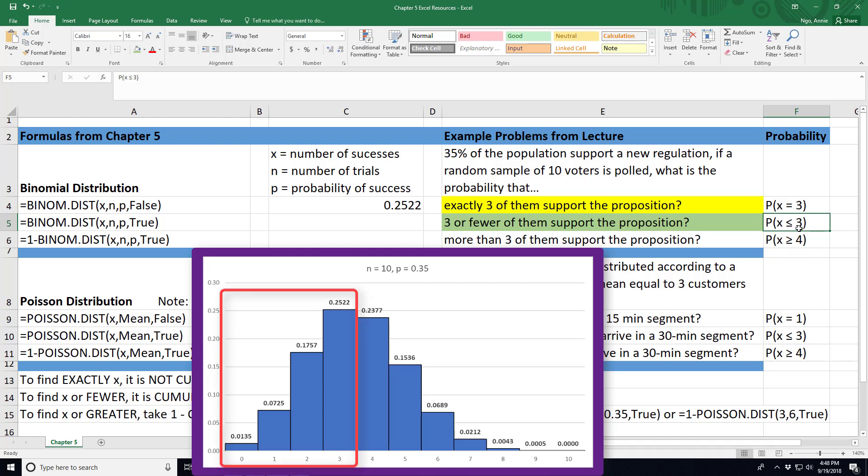Because three or fewer includes 3, 2, 1, or 0 voters supporting the proposition. So I'm going to go ahead and use this formula right here.